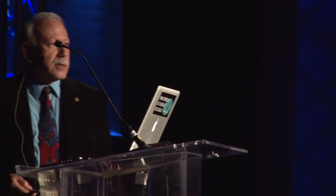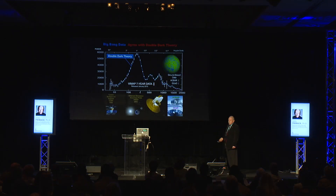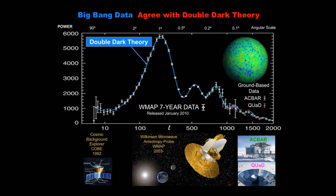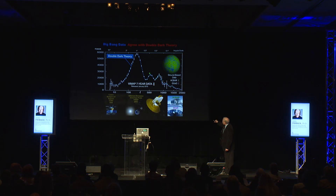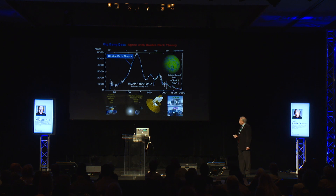But every single data point, as it's come in, agrees with the predictions. I could show you many other curves of this sort that represent different predictions from this theory, and the data as it's coming in is exactly in accord — there are no discrepancies. This says that the typical size of the spots is about one degree; not half a degree, but then a third of a degree is favored. It can't be a coincidence that this really works.